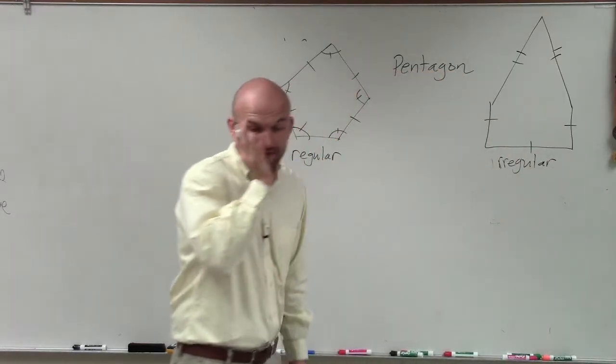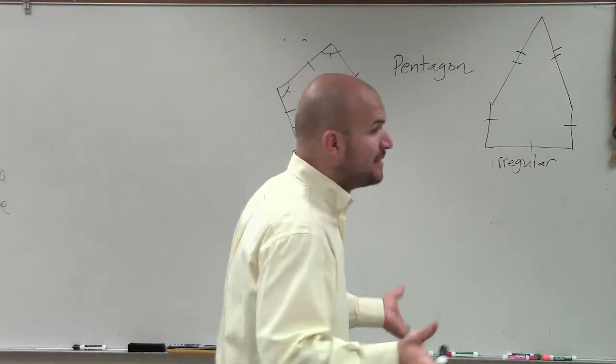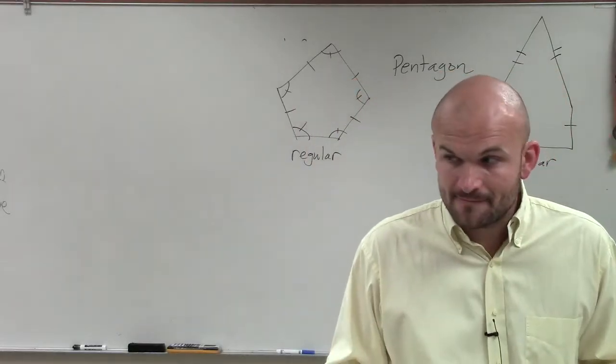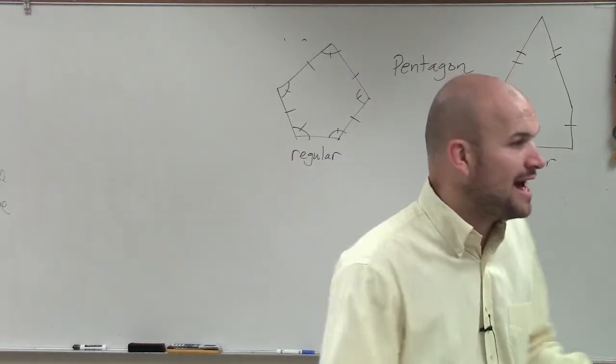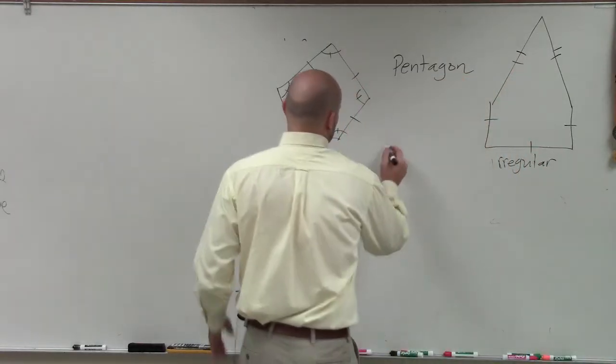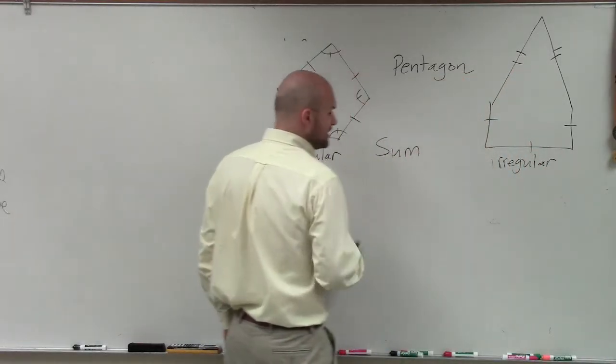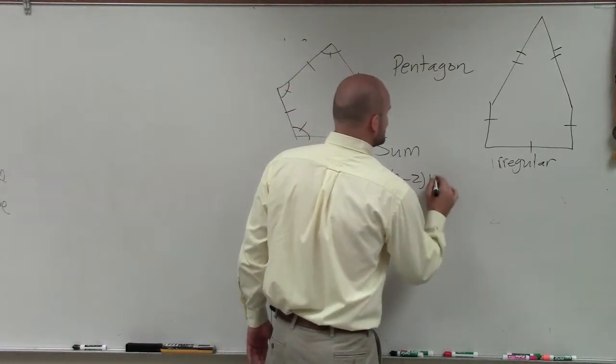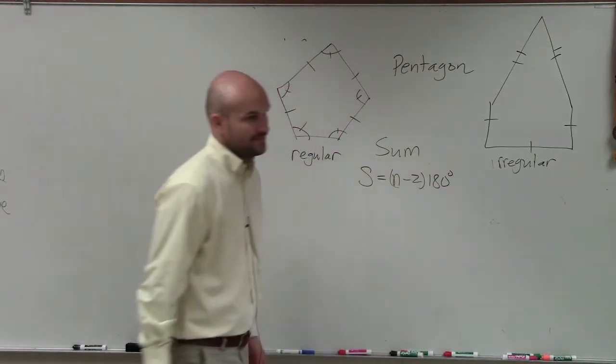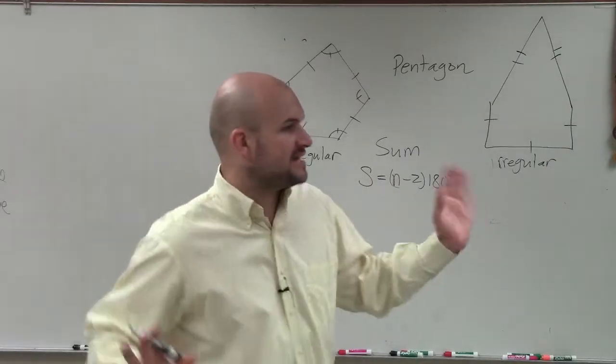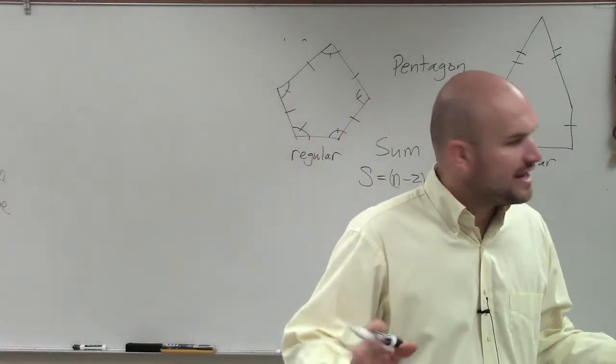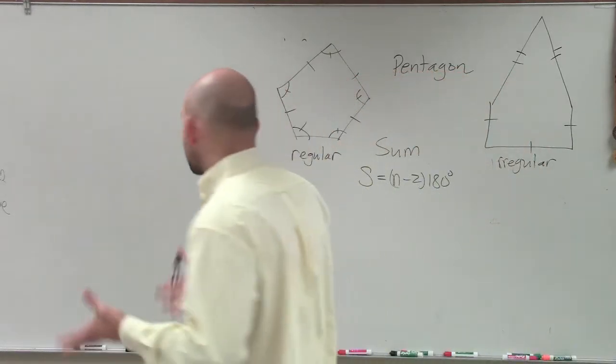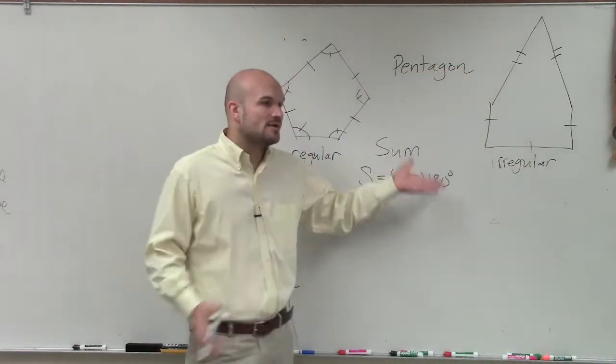So you need to make sure you know what the difference between a regular and an irregular. But it doesn't matter if it's an irregular or a regular pentagon. It doesn't matter what type of polygon you have. The sum is always going to be this formula. S equals n minus 2 times 180 degrees. Always. It doesn't matter if it's a regular or if it's irregular. Your sum of the interior angles of any polygon is always going to be in this form.